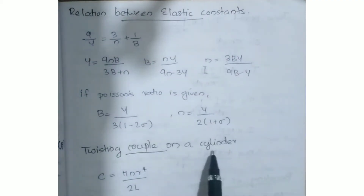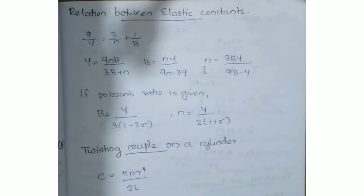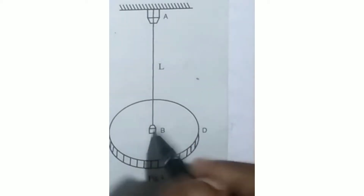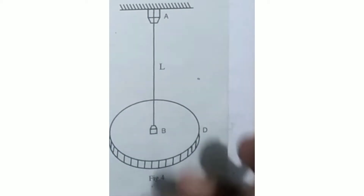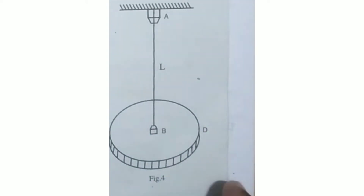Next, twisting couple on a cylinder. The twisting couple C is equal to pi n r to the power 4 divided by 2L. Next is the Torsion Pendulum, which is used in the lab. The Torsion Pendulum consists of a string and a disk. This experiment is used in the lab to determine the rigidity modulus.